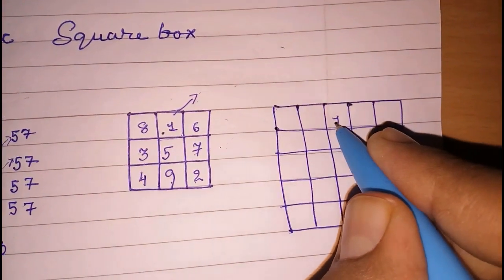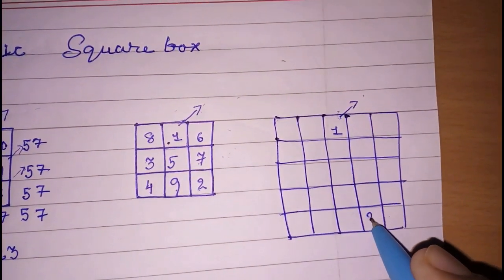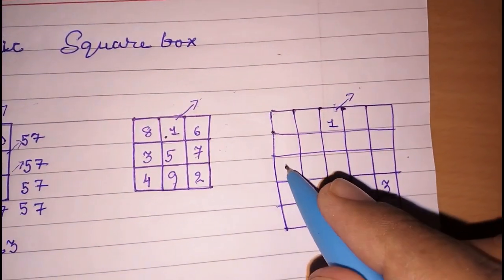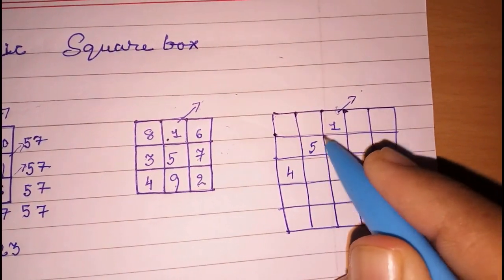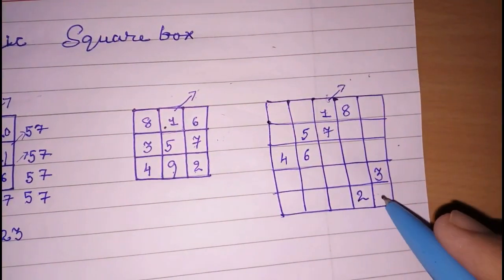And I am going to put it 1 here, then 2, here it will not come, so 2, then 3, then 4 here not, so 4, then 5, 5, so 6, 7, 8, no box here, 9.